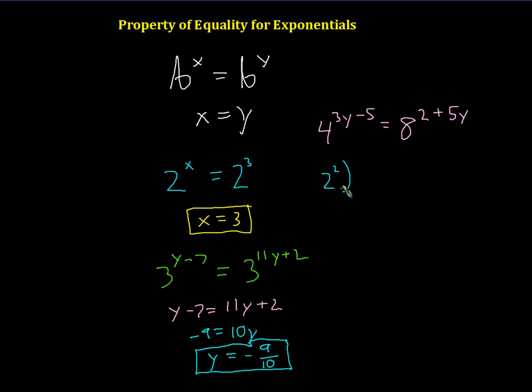So this is really 2 squared raised to the power of 3y minus 5. And 8 is really 2 cubed raised to the power of 2 plus 5y. And then you can go ahead and use the property.